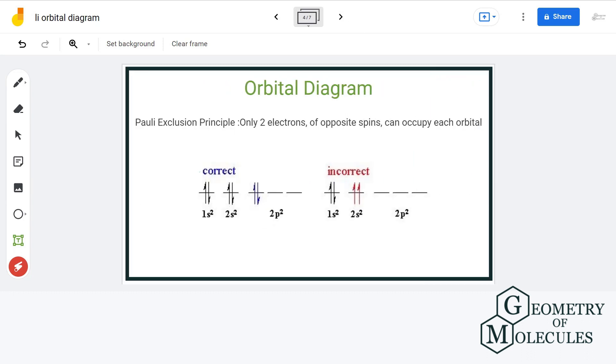The third and last rule is Pauli's exclusion principle that states the arrangement of two electrons in any orbital. It states that there can be a maximum of two electrons in an orbital, and that too should have opposite spin. No two electrons with same spin can occupy a single orbital as shown here. That is incorrect.